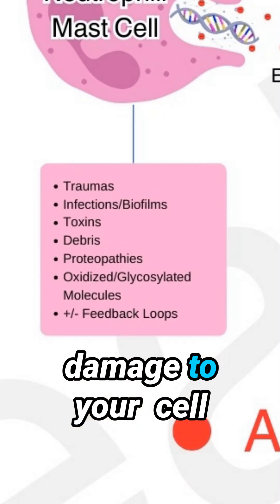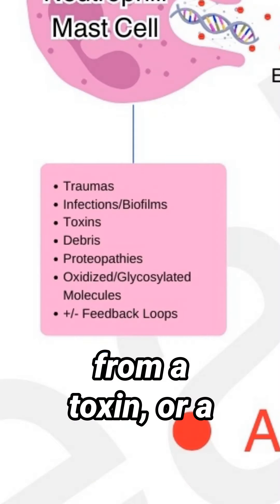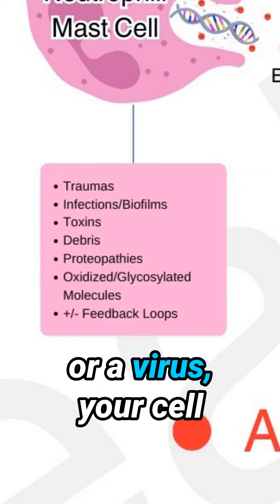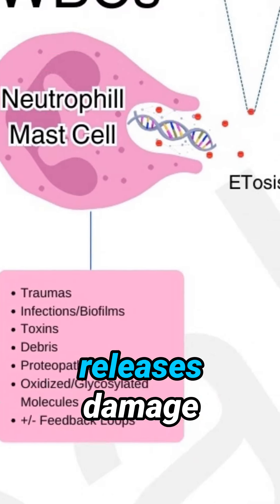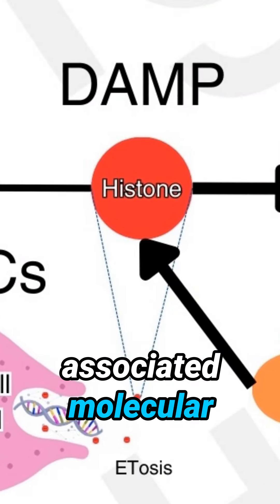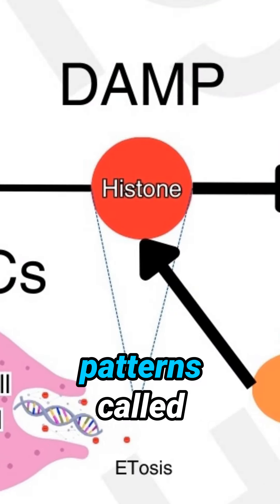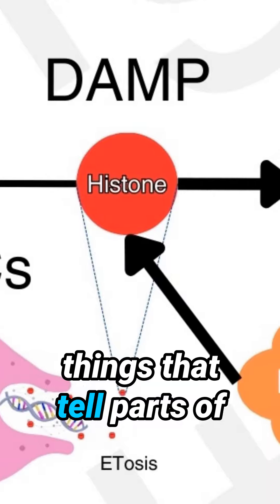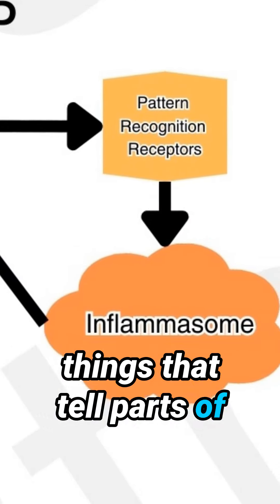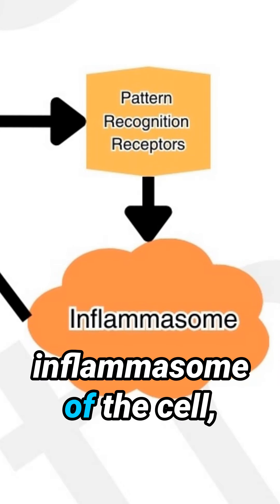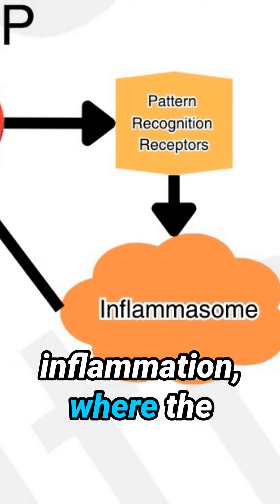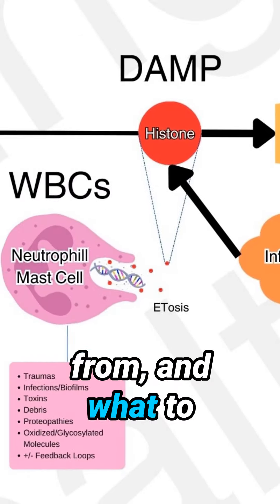When you have damage to your cell from a toxin, a parasite, a pathogen, or a virus, your cell releases damage-associated molecular patterns called DAMPs. DAMPs essentially tell parts of what's called the inflammasome of the cell — the thing that creates inflammation — where the inflammation is coming from and what to create.